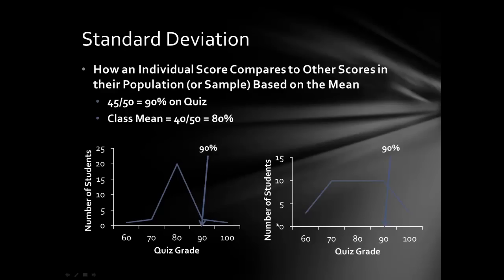But if the standard deviation were larger — say 20 points — the mean is still 80%, but now there's more spread in scores. They're not concentrated around 80; they're spread across the distribution. In that case, your 90 is still in a fairly high frequency part of the distribution. Lots of other people did just as well. So it's important to consider not just where your score is relative to the mean, but how extreme it is in terms of the standard deviation.